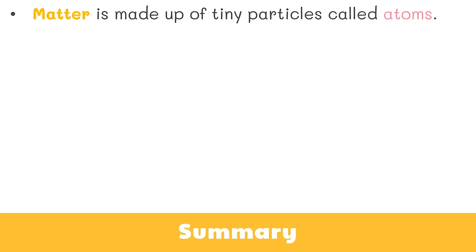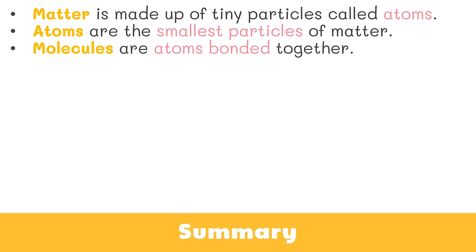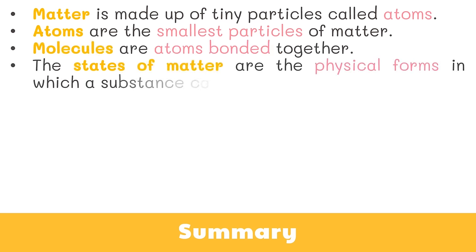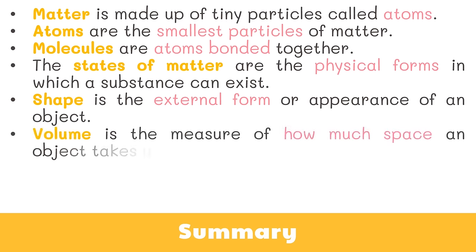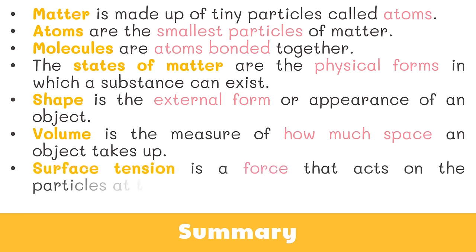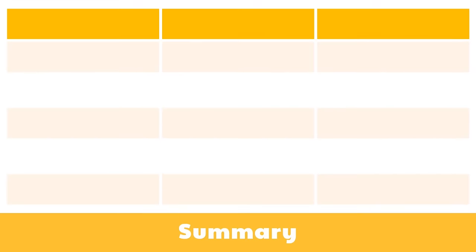Now let's wrap things up! Matter is made up of tiny particles called atoms. Atoms are the smallest particles of matter. Molecules are atoms bonded together. The states of matter are the physical forms in which a substance can exist. Shape is the external form or appearance of an object. Volume is the measure of how much space an object takes up. Surface tension is a force that acts on the particles at the surface of a liquid. And viscosity is a liquid's resistance to flow. Here is a table summarizing the characteristics of solids, liquids, and gases.